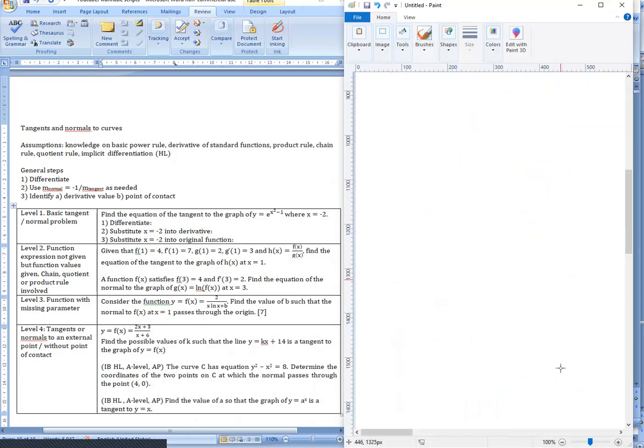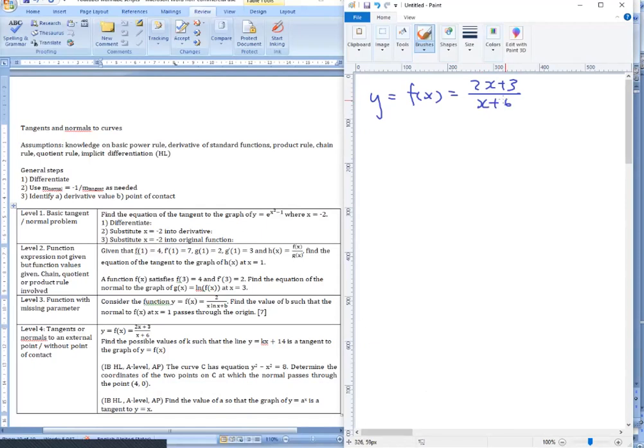Now to the last type. Tangents or normals to an external point without the point of contact. So these questions don't show up too much. But the problem is that when they do the students are often at a loss, they're just confused. They don't know how to get started. But the most important thing is to express the point of contact in terms of some unknowns. So for the first question we have a linear reciprocal function. Find the possible values of k such that the line y equals kx plus 14 is a tangent to the graph. So let's differentiate first. And the derivative can be figured out using quotient rule again. I'll just skip some steps because I've done this many times. So this happens to be the derivative of the graph.